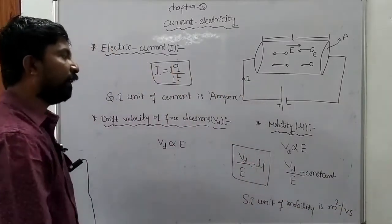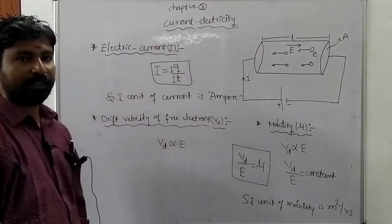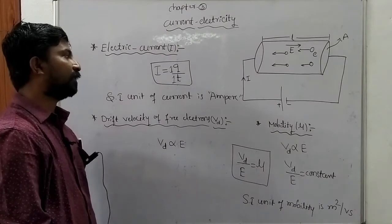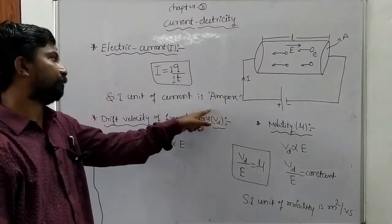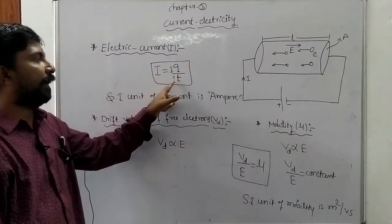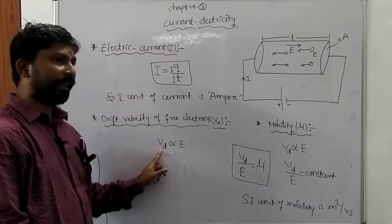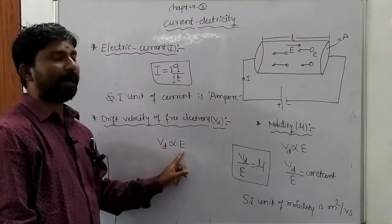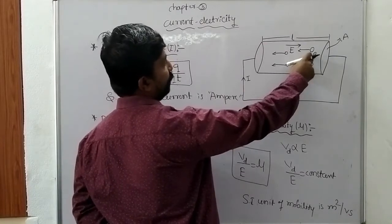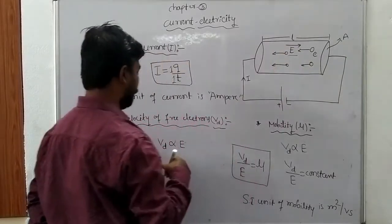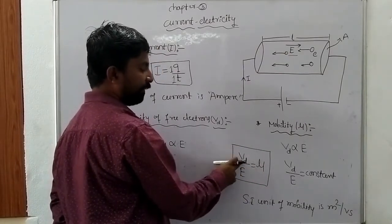These are the very important basic concepts of current electricity. To summarize: the flow of electric charge is called current, or the time rate of flow of charges through any cross-sectional area of a conductor is called current. The unit of current is ampere — one coulomb of charge flowing through a conductor in one second is called one ampere. Drift velocity is the velocity gained by the free electrons in the direction opposite to the applied electric field. Mobility is defined as the drift velocity of the free electrons per unit electric field.